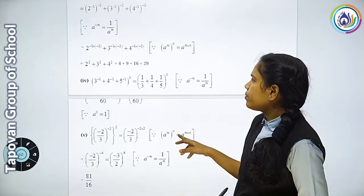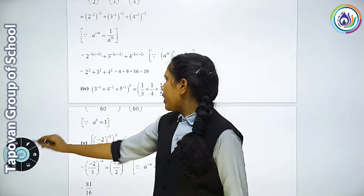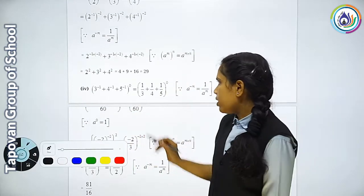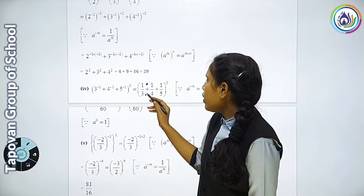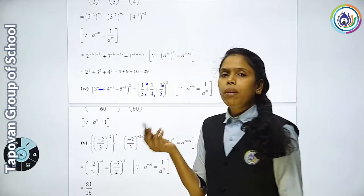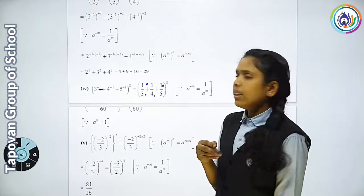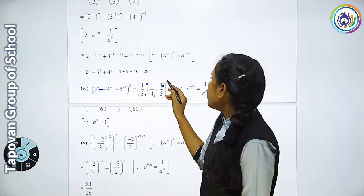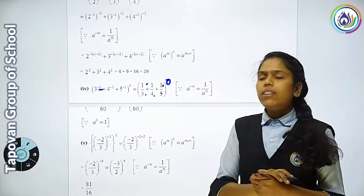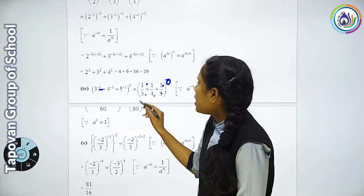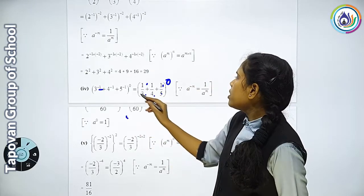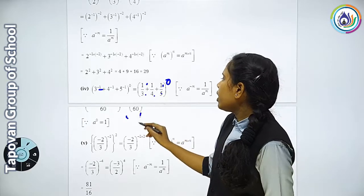4th number: 3 raise to minus 1, 4 raise to minus 1 and 5 raise to minus 1. Sabhi ka ho gaya 1 upon 3, 1 upon 4, 1 upon 5 — kyunki minus tha. Sabhi ka brackets mein power kitni hai? 0. Jab kisi bhi number ki power 0 ho, uska answer kitna ho gaya? 1. So in sab ka answer kitna ho gaya? 1.